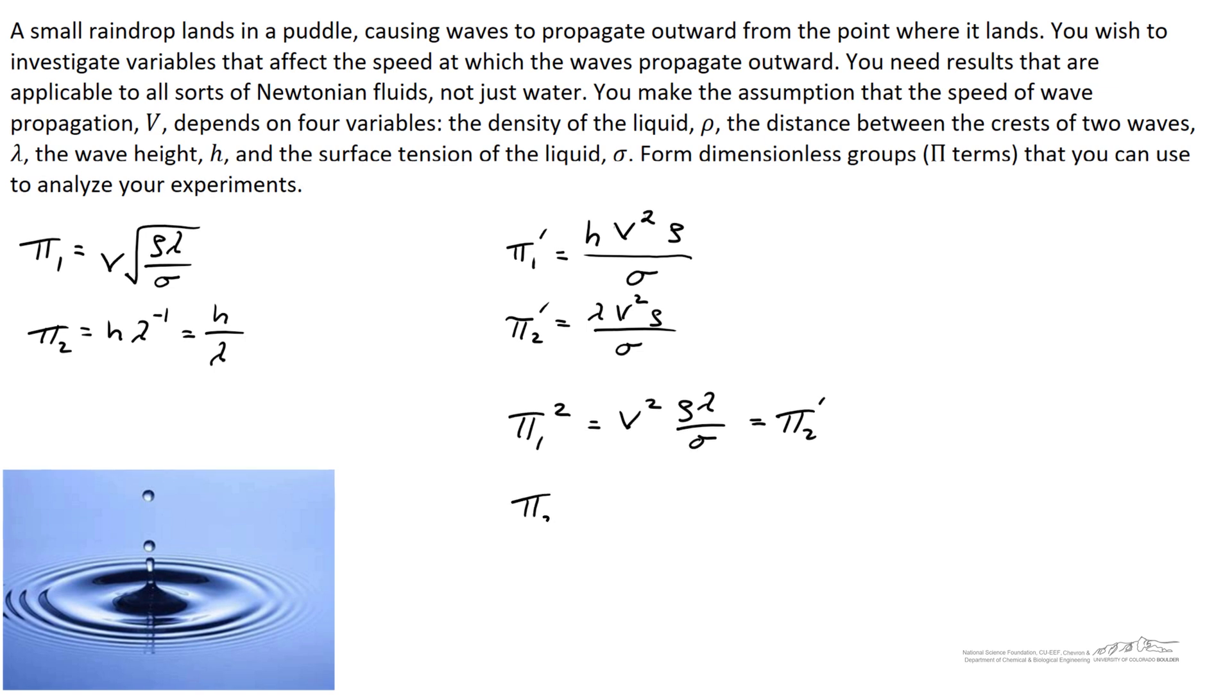And you can also show that pi 2 is equal to the ratio of pi 1 prime to pi 2 prime. So if you were solving this problem for a homework problem or a test, to get a unique answer your teacher would have to specify what repeating variables you ought to choose. Otherwise as long as you come up with two pi terms, there could be multiple correct answers.